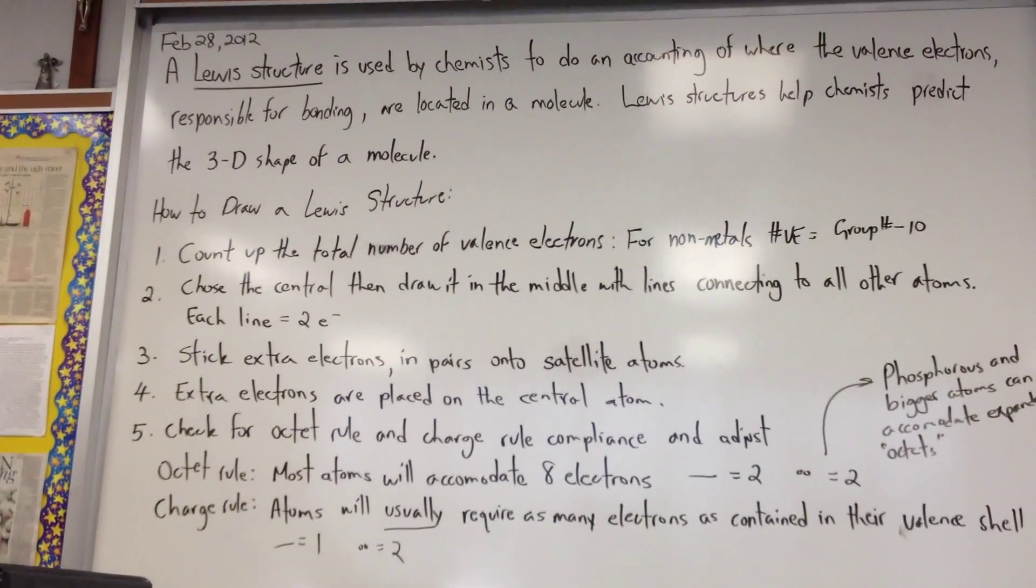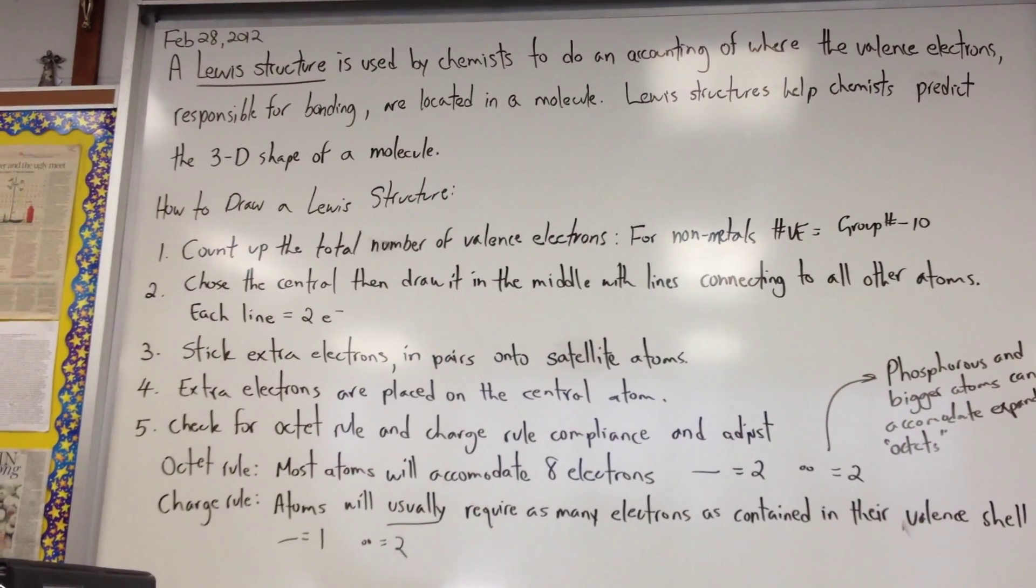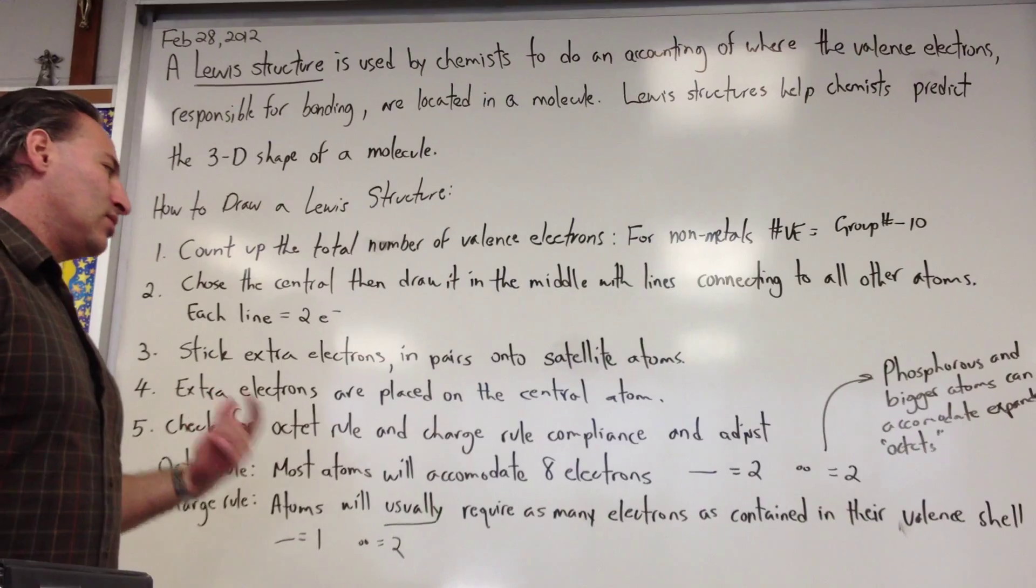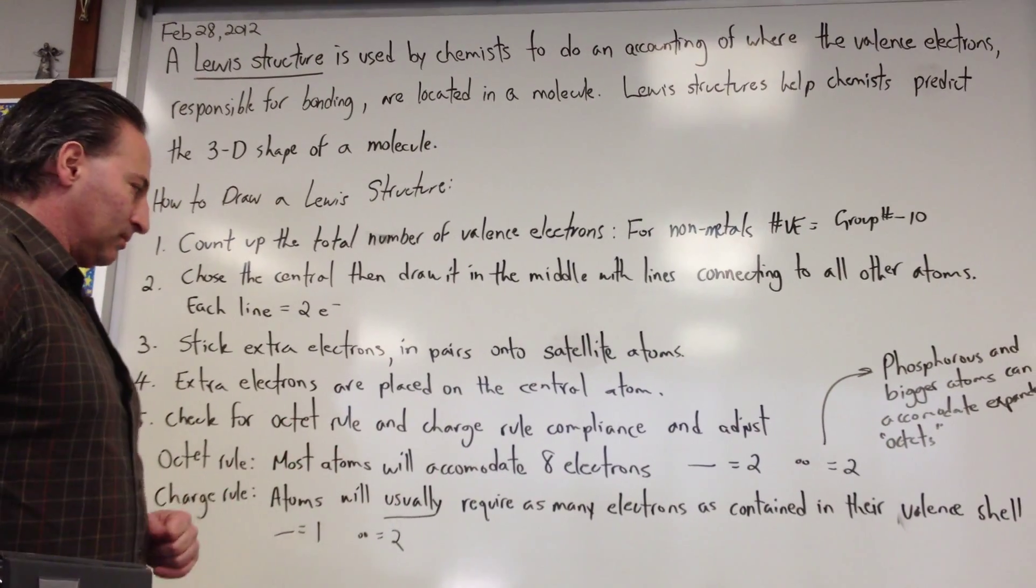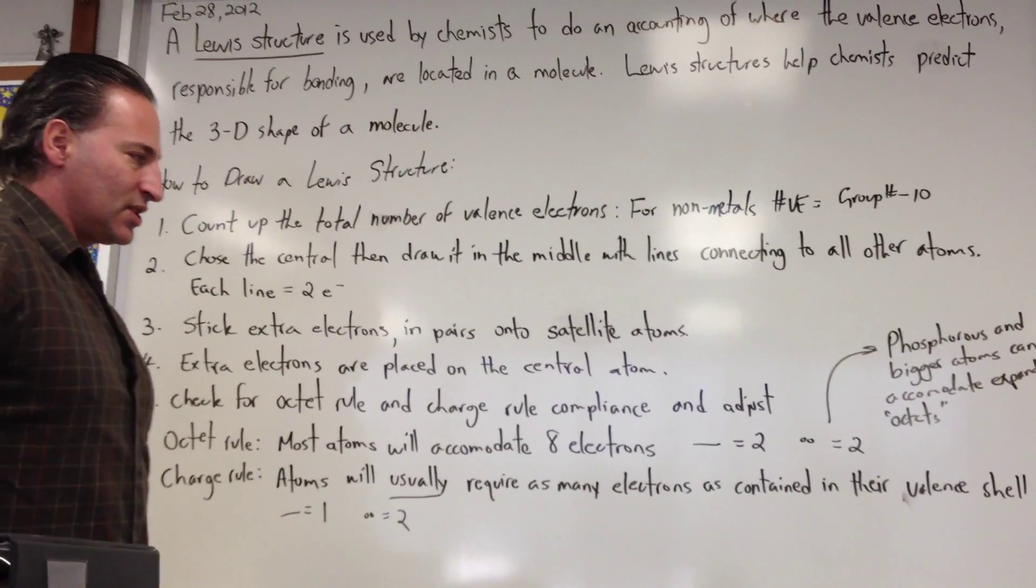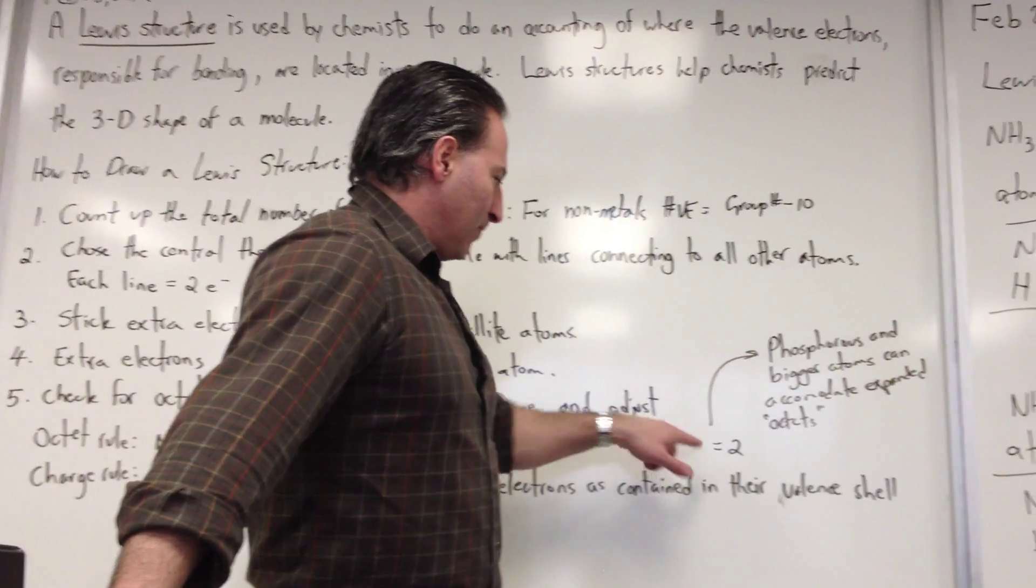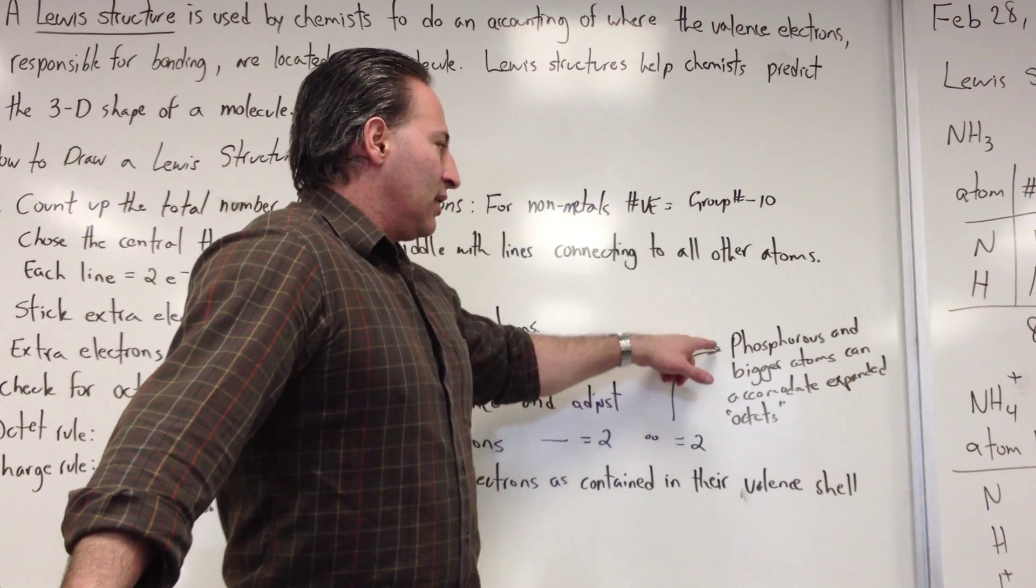Fourth, any extra electrons that are left over are placed on the central atom. Fifth rule, we check for octet and charge rule compliance and then we adjust the structure. The octet rule says that most atoms will accommodate 8 electrons. When you count up for octets, a bond is worth 2 and the lone pair equals 2.